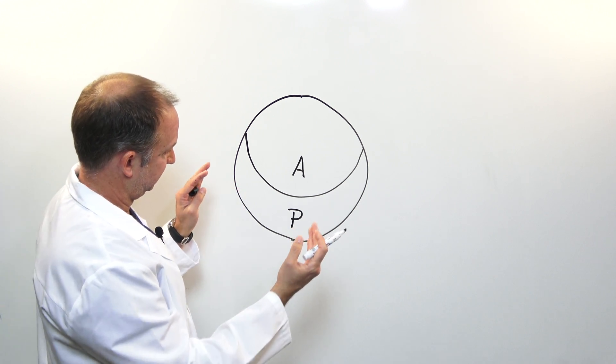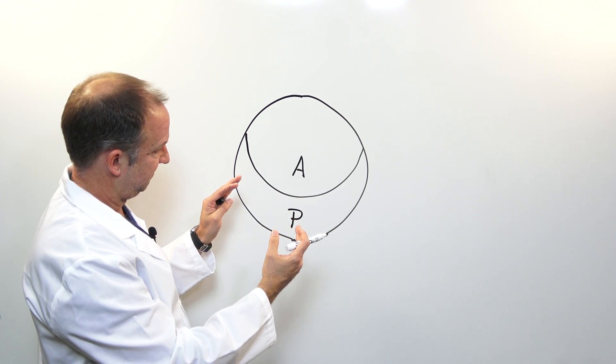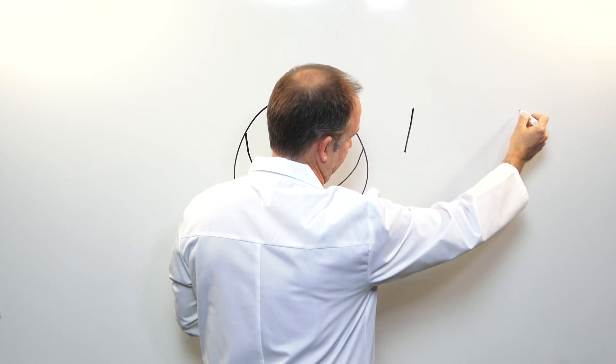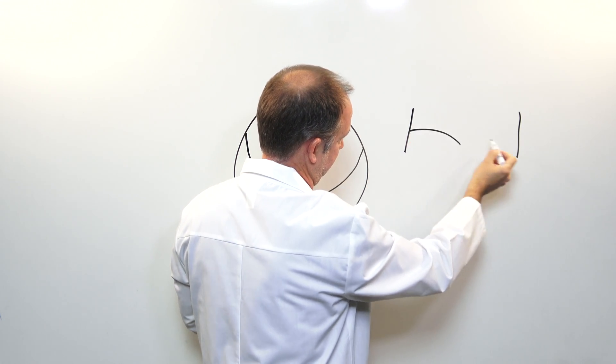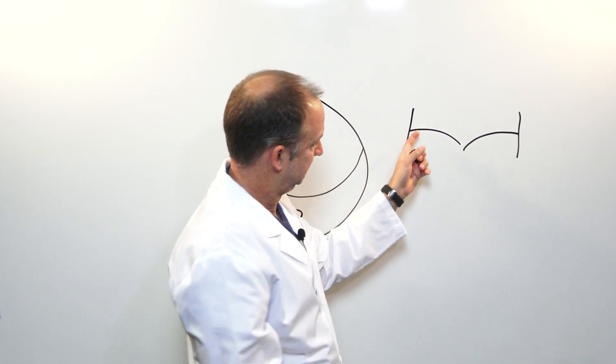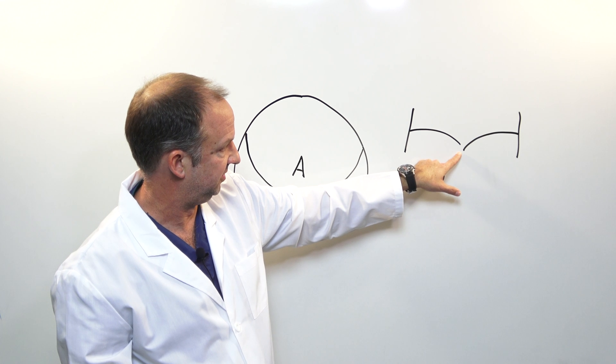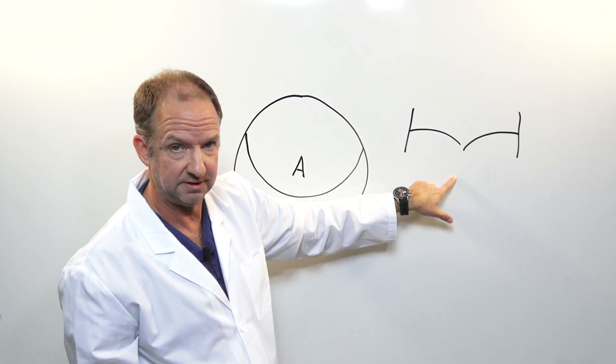Now this is if you look at the valve straight on. If you look at the valve from the side, this is what I imagine. The two leaflets come together in the center of the division between the left atrium and the left ventricle.